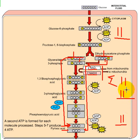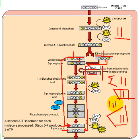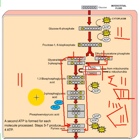Altogether, we produce 2 ATP in one step and 2 ATP in another step, for a total of 4 ATP produced. We used 2 ATP at the start, so our net gain is 2 ATP. We also produce 2 NADH in this process.